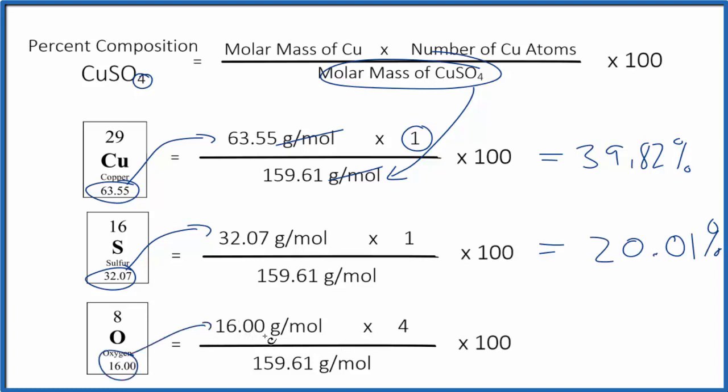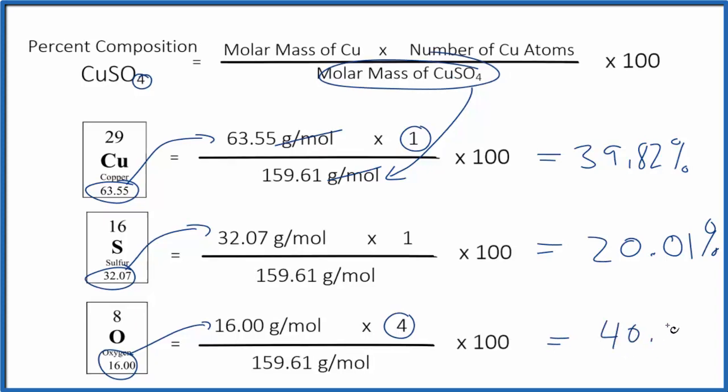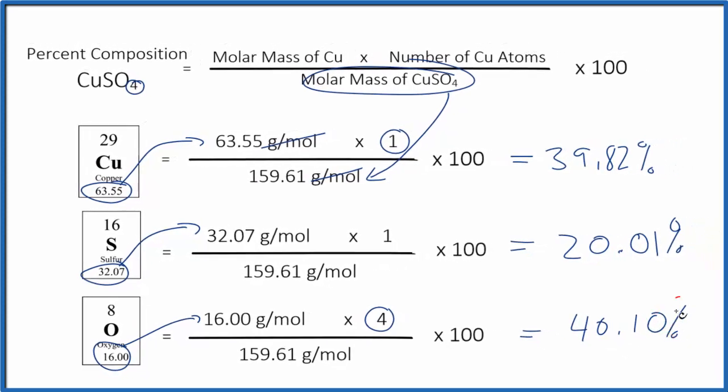So we have that 16 here times the four oxygen atoms. We multiply first, then we divide by the molar mass. Once we get that number, we multiply it by 100, and we get 40.10 percent for the percent composition by mass, the percent composition by mass of oxygen in copper sulfate.